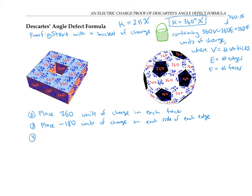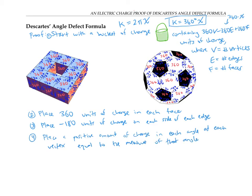Finally, I want to distribute charge to vertices. I'm going to place a positive amount of charge in each angle at each vertex equal to the measure of that angle. So I'll put 90 units of charge in every single angle of every single square. In the soccer ball example, I'm putting 120 units of charge in each of the hexagon angles and 108 units of charge in each of the angles of each pentagon.